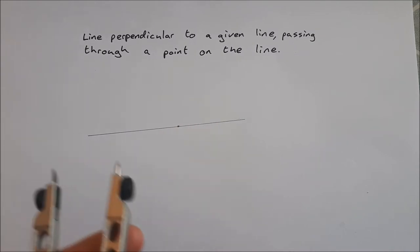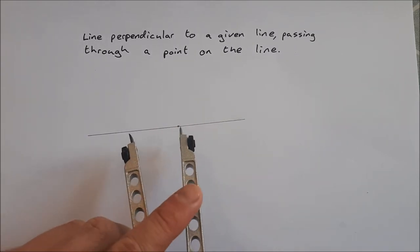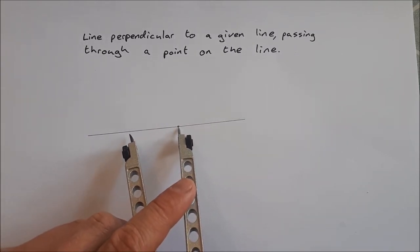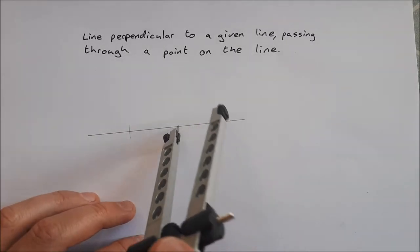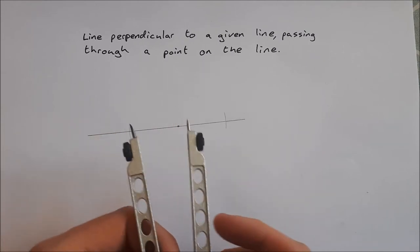What you do for this one is you get your compass and place the point of your compass on the point that's on the line. You draw an arc on either side of the line, then you make your compass a little bit bigger.